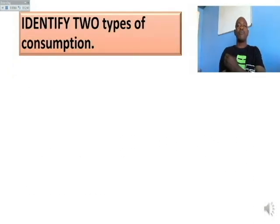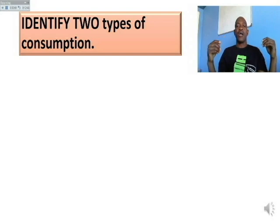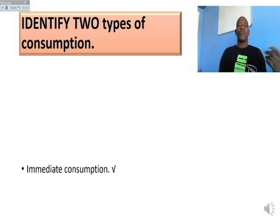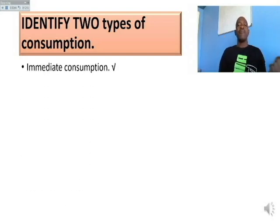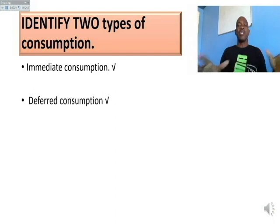Identify two types of consumption. Here you just name them — give two types of consumption. We have immediate consumption and we have deferred consumption. There is no need to explain anything because you are just naming.